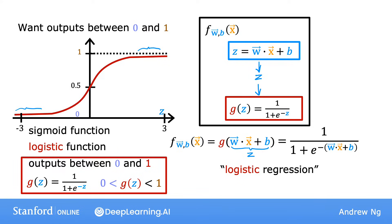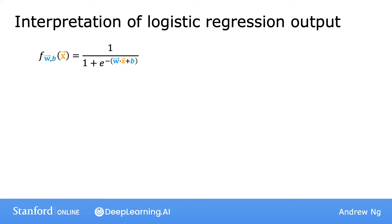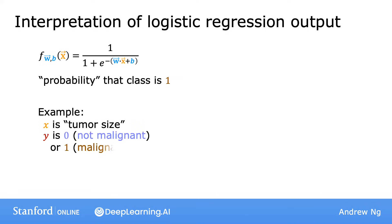Next, let's take a look at how to interpret the output of logistic regression. We'll return to the tumor classification example. The way I encourage you to think of logistic regression's output is to think of it as outputting the probability that the class or the label y will be equal to 1 given a certain input x. So, for example, in this application where x is the tumor size and y is either 0 or 1,